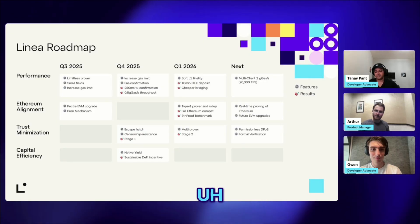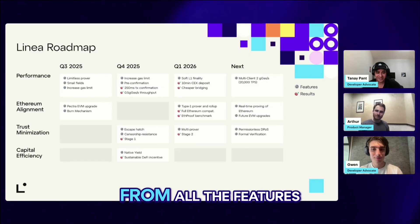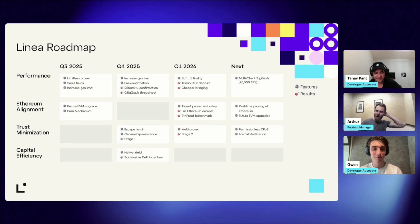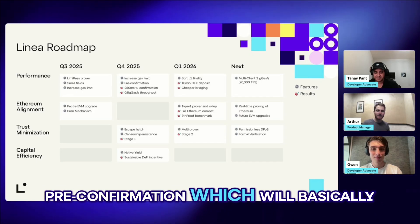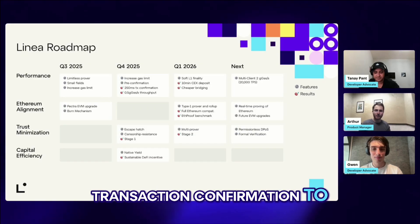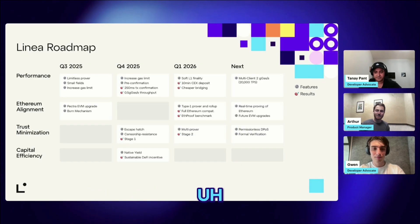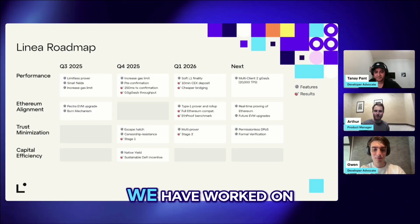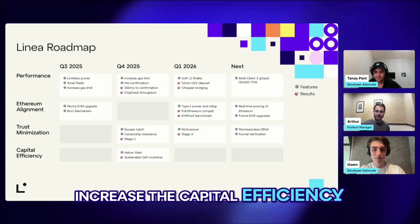Arthur, what are you most personally excited about from all the features expected in Q4 from Linea? I'm very excited about pre-confirmations, which will give almost instant transaction confirmation to users, so you can really have a snappy UX. The native yield is also a big piece we've worked on, increasing the capital efficiency of the chain.